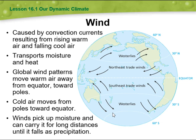Wind is driven by convection currents resulting from rising warm air and falling cool air. It transports moisture and heat, and global wind patterns move warm air away from the equator towards the poles, while cold air moves from the poles towards the equator. Wind picks up moisture and can carry it for long distances until it falls as precipitation.